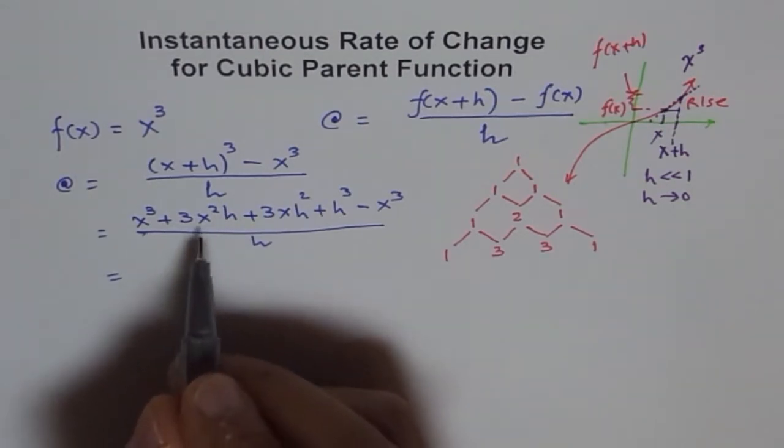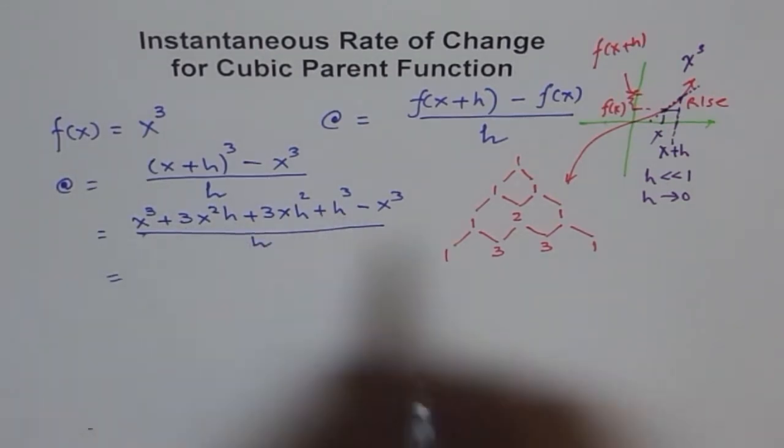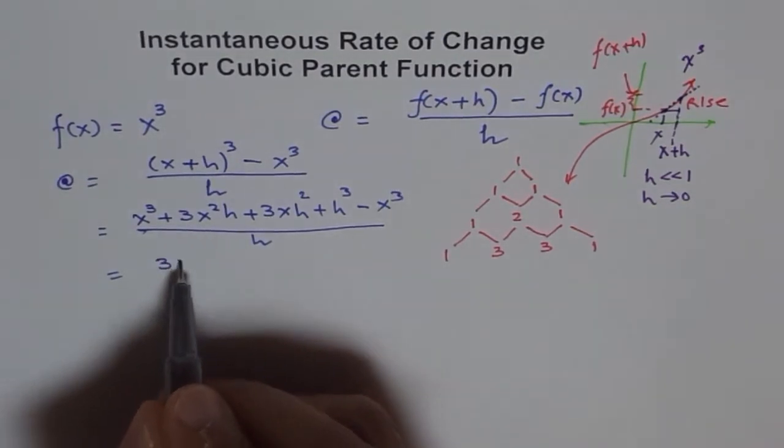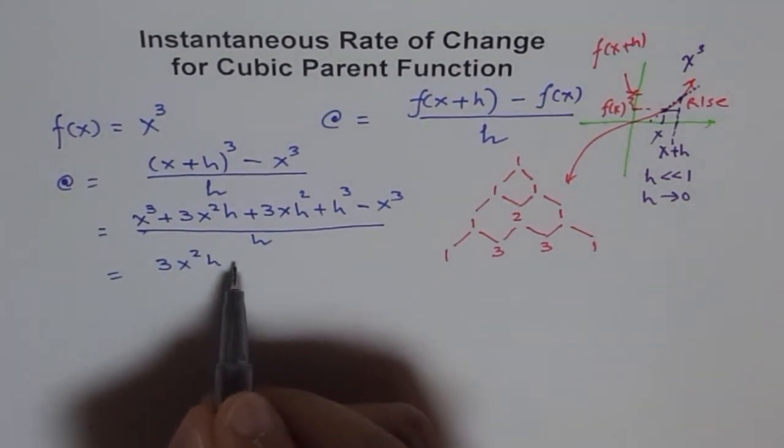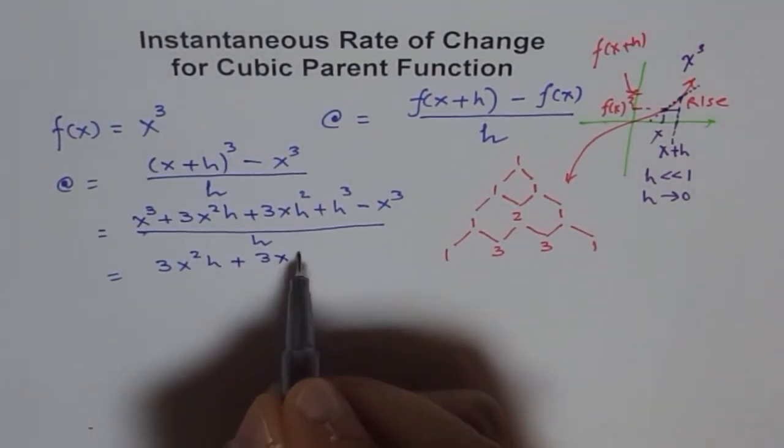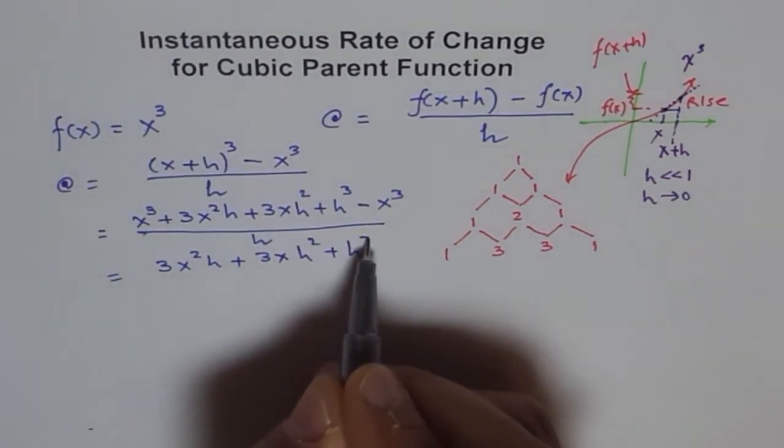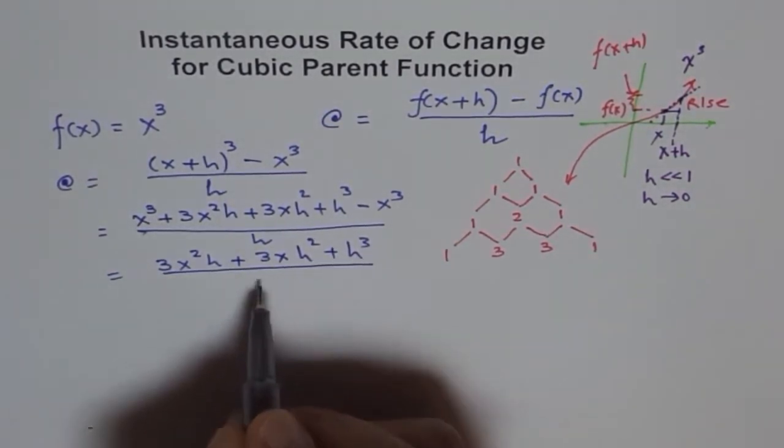Let me break up the steps. This becomes 3x²h + 3xh² + h³ over h. Now I can take h common.